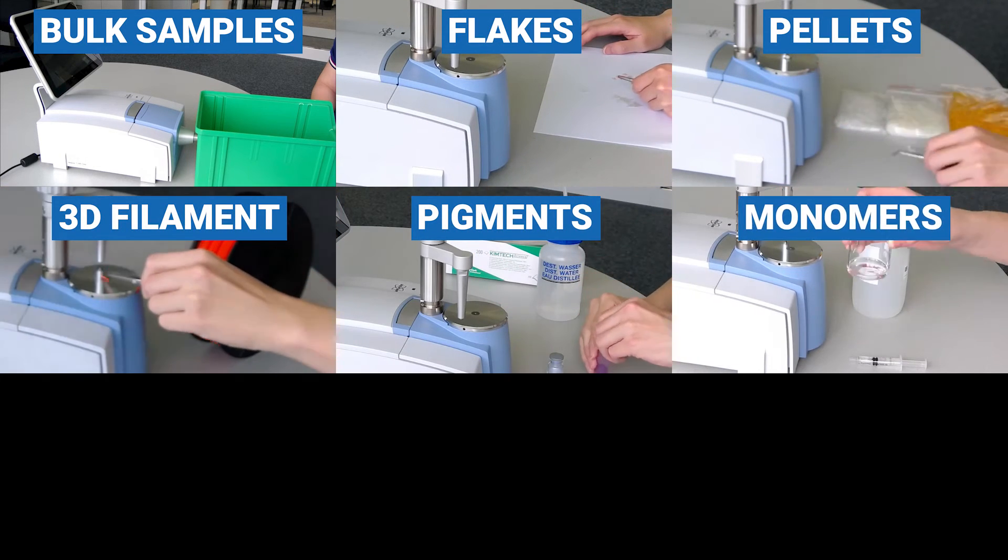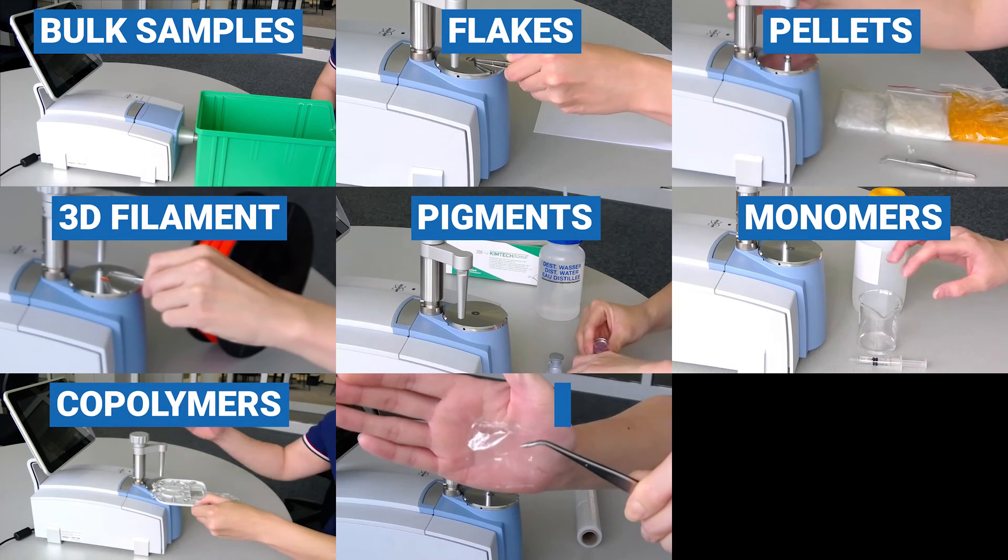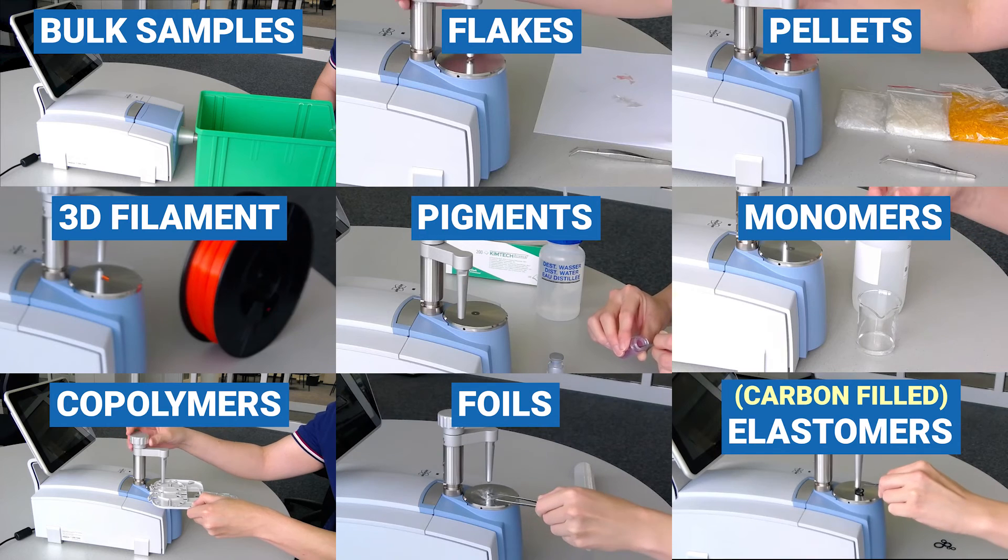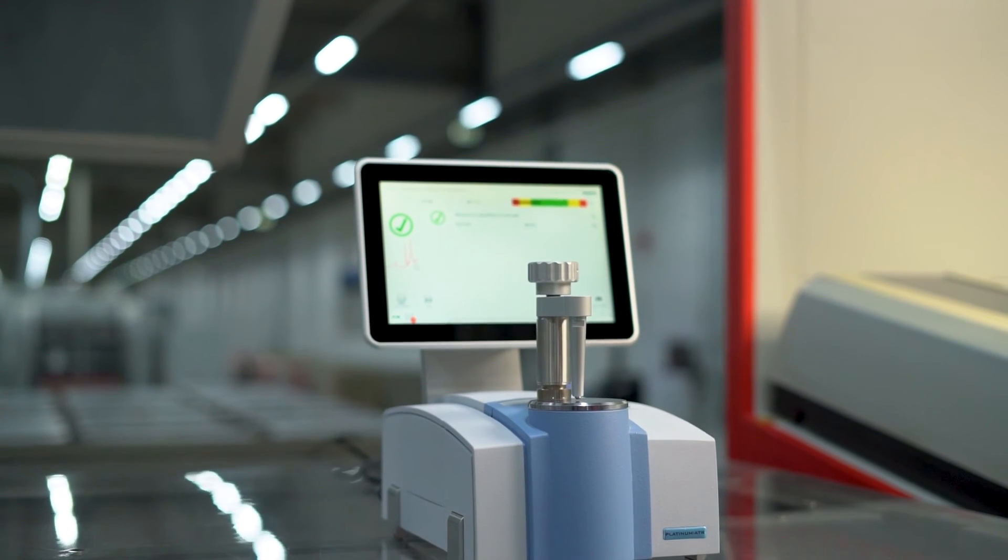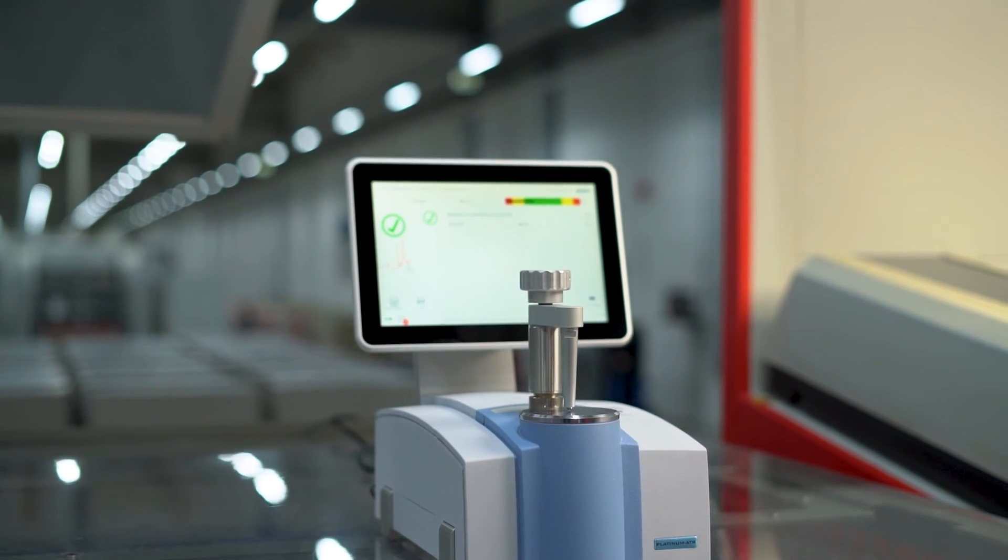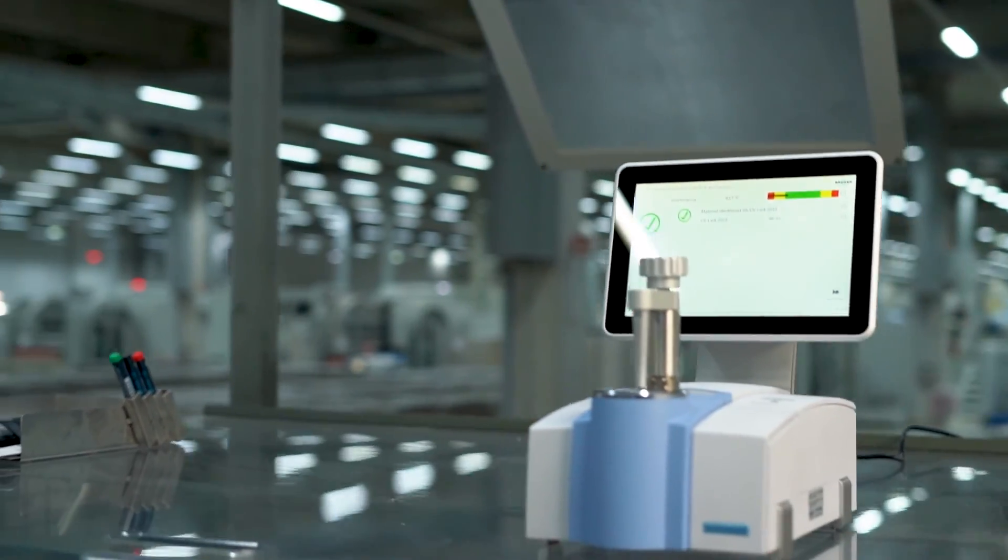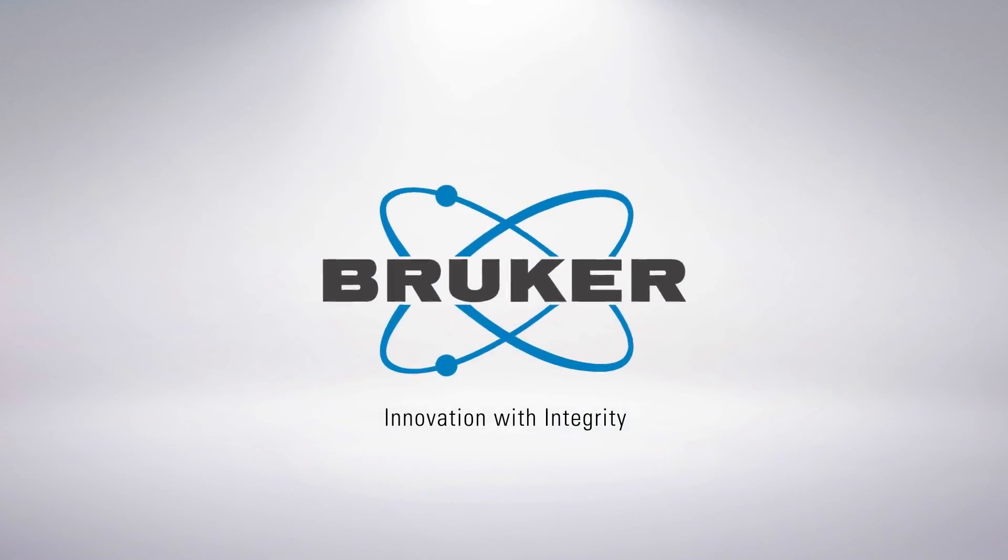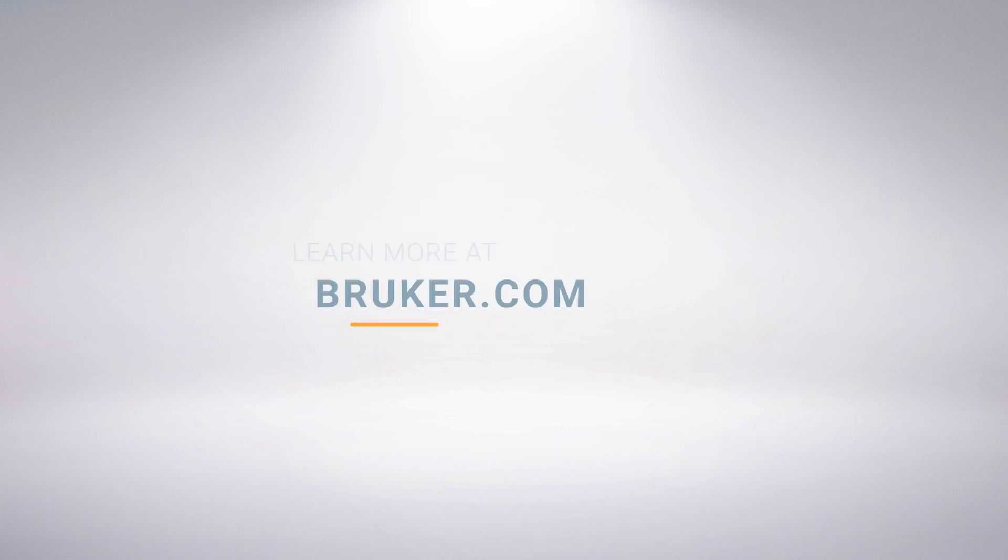From small flakes and pellets, to pigments and monomers, to large copolymer pieces, even carbon-filled elastomers. With the Alpha 2 FTIR spectrometer, any polymer can be analyzed so it can be properly sorted for the recycling process. Thanks for watching. We'll see you next time.